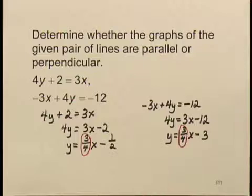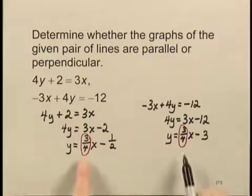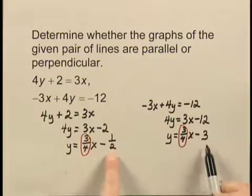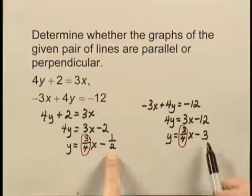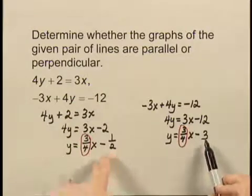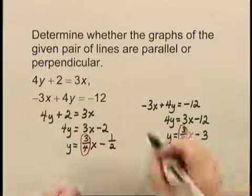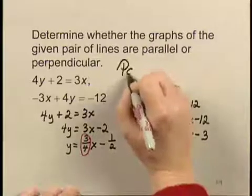Now, the lines are parallel, since they have the same slope, as long as the lines aren't exactly the same line. Looking at the y-intercepts, we see they go through the y-axis at different points, so they're not the same line. So since they have the same slope and different y-intercepts, the graphs are parallel.